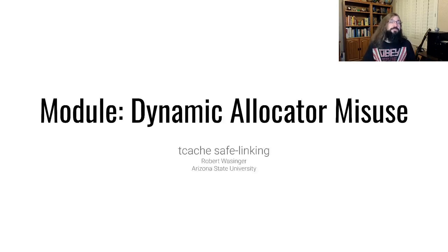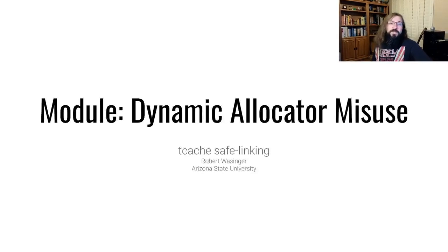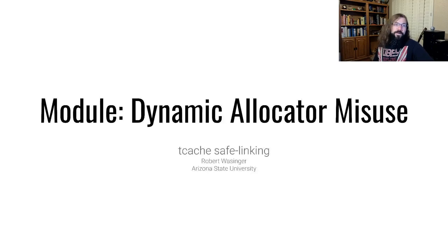As of late, security has been a hot topic. When we talk about the heap, there are definitely mitigation techniques implemented in singly linked list heap implementations like TCache or Fastbin that are worth talking about. In this video, we're going to talk about one exploit prevention technique called safe linking — what it attempts to prevent, how those prevention mechanisms are implemented, and how a committed attacker can get around them.